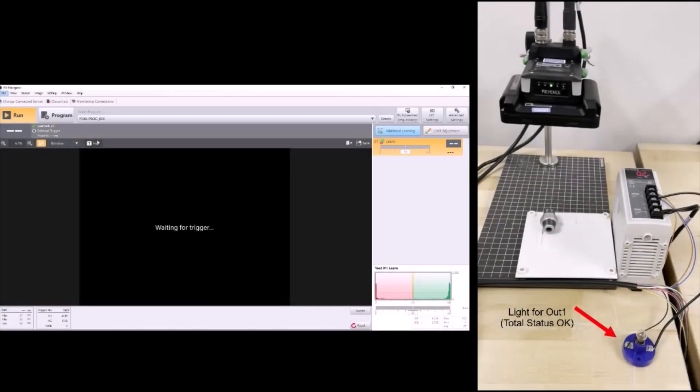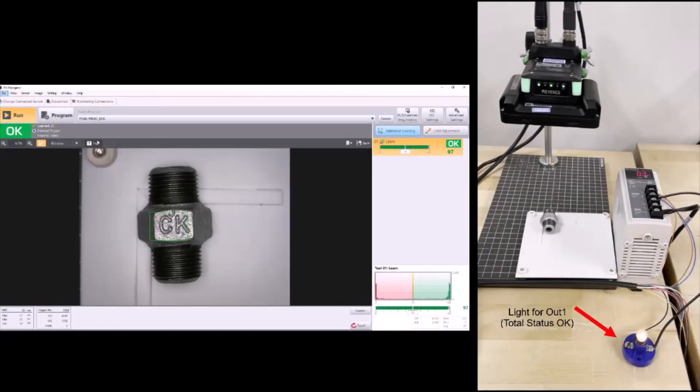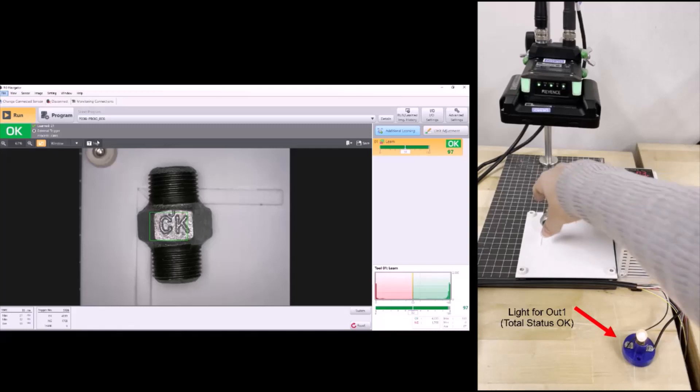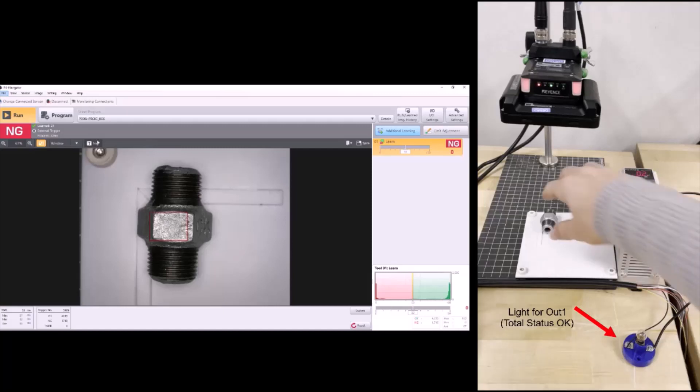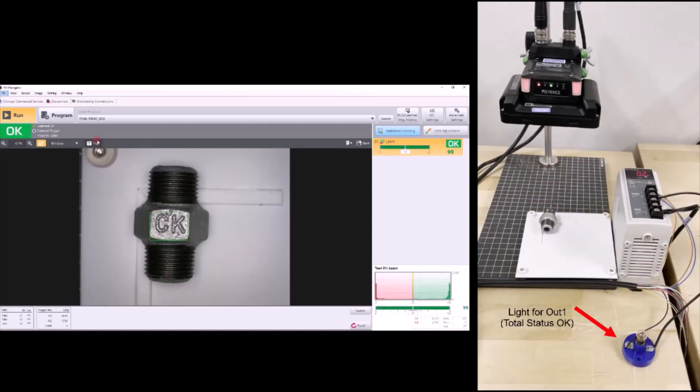If we put this into run mode, here's a side-by-side comparison. When I get an OK result, you can see that light turn on. And for a no-good result, the light turns off. This is showing that my output is correctly working for a PNP setup.